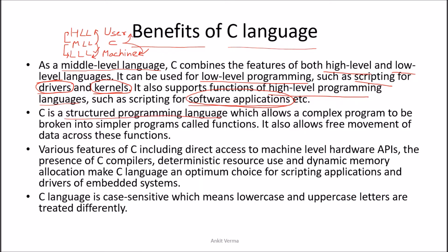C is a structured programming language which allows a complex program to be broken into small programs called functions. A huge program in C can be divided into small functions — for example, in a complete Microsoft Windows, the coding of the clock is separate and the coding of the menu is separate. This makes it easy to debug, easy to detect, and easy to correct the code. It also allows free movement of data across functions.